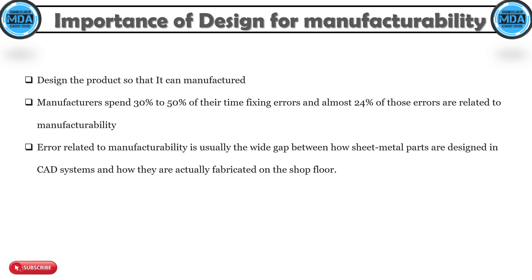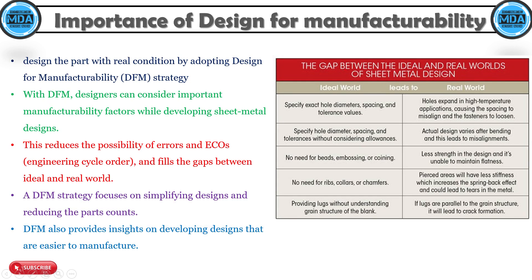So what we need to understand is the function of the part, the requirements of its features, and how the product is manufactured — including what tools and processes are being used. We need to design the part considering real conditions, as shown in the chart with ideal versus real conditions.